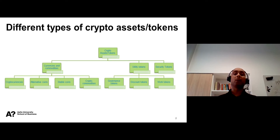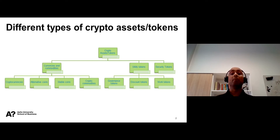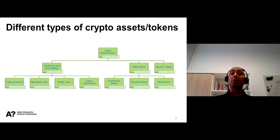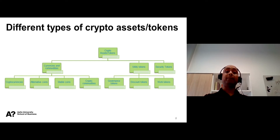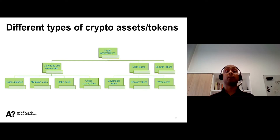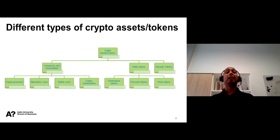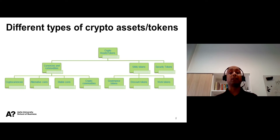Some other types of stablecoins are not backed by any assets and use algorithms to manage their supply vis-à-vis their demand to stabilize prices. One notable example is the dollar-pegged Basecoin, which uses consensus mechanisms to increase or decrease the supply of tokens. Consensus mechanisms allow network participants to create consensus on whether more currency should be released in the market or the supply of currencies should be restricted.